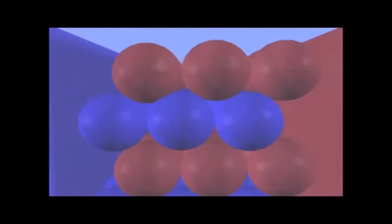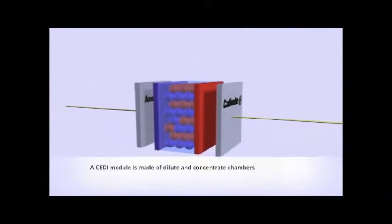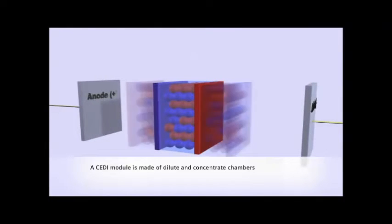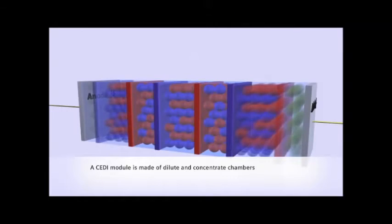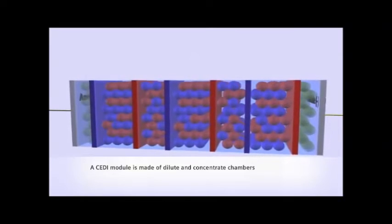Taking a step back to look at how an IonPure CEDI module is constructed, we can see that if we move the electrodes farther apart and continue to add resin beads sandwiched between the cation and anion-selective membranes, we create a series of water purification compartments alternating with compartments where the ions are concentrated.